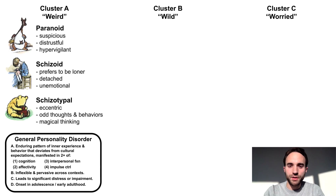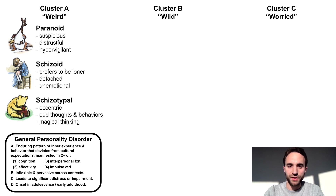Starting with Cluster A, paranoid personality disorder involves pervasive suspiciousness, distrust, and hypervigilance, much like Roo's watchful mother, Kanga.